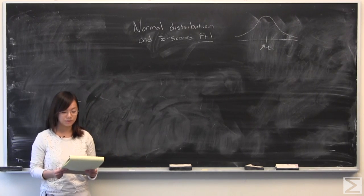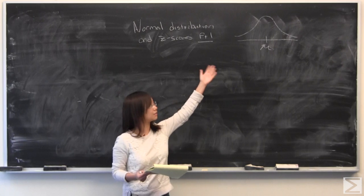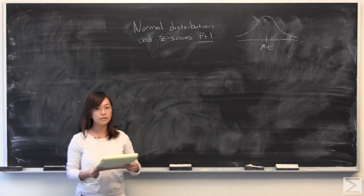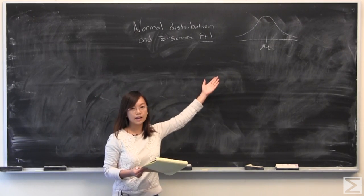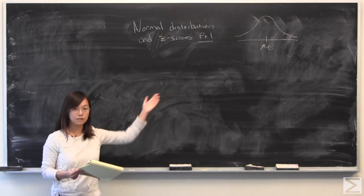So you may have heard of the normal distribution before, and that's where I will be starting today. It is this bell-shaped curve. I kind of drew one up there. It is symmetric and peaks at mu, the average, and the total area under the curve must equal 1.